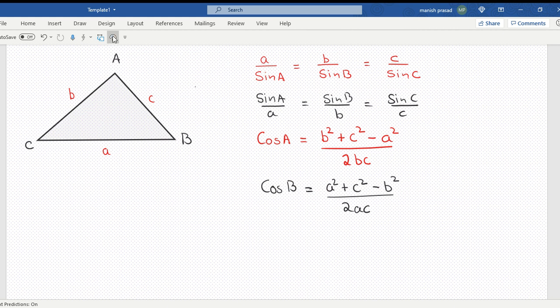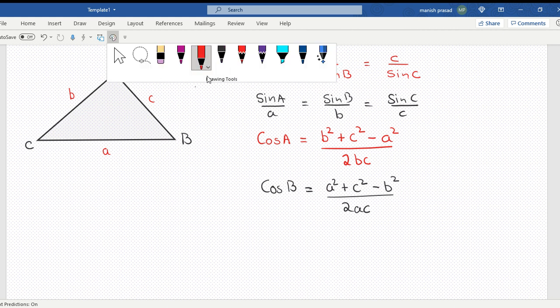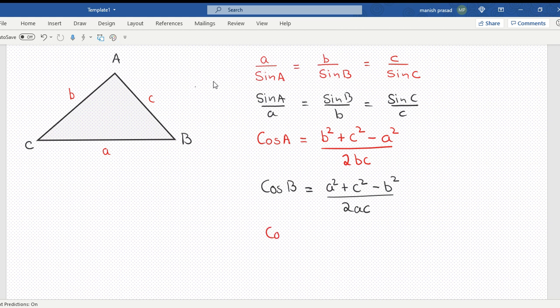Then let's look at the third one. Now you will tell me what will cos C be. Cos C would become the adjacent sides A and B. So A square plus B square minus C square upon 2AB.